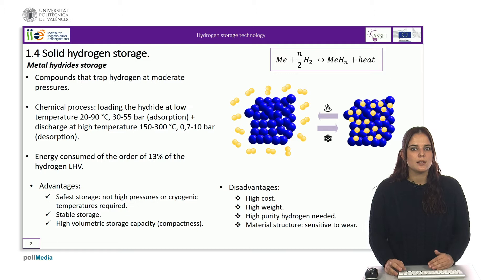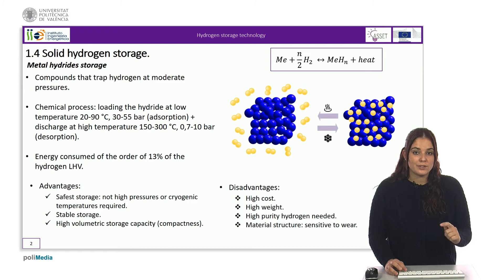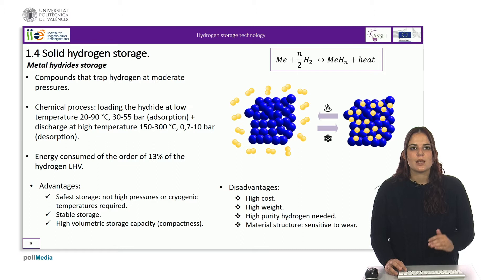Assuming that the heat needed for desorption comes from residual heat, for example from the fuel cell itself, it is estimated that the energy consumed by this type of storage is of the order of 13% of the lower heating value of hydrogen, being comparable to a storage in compressed hydrogen at 700 bars.